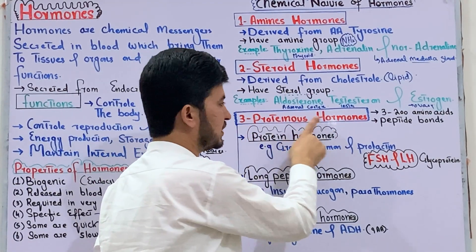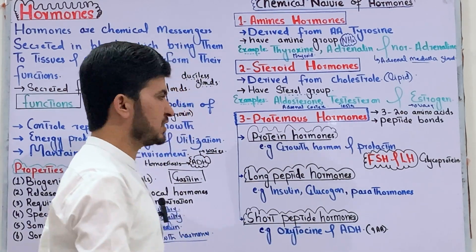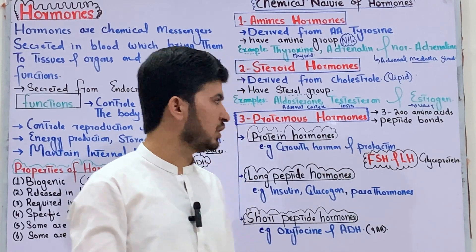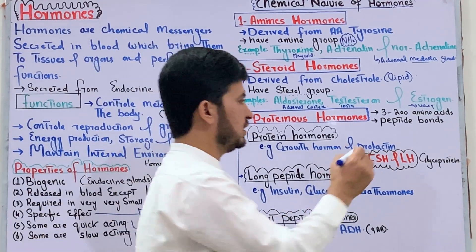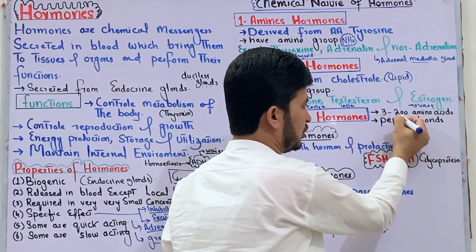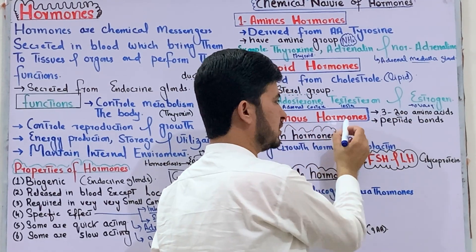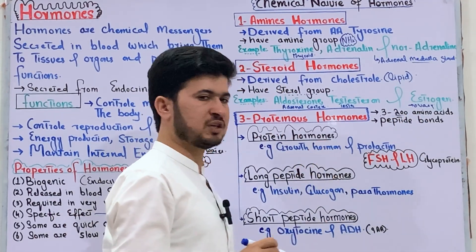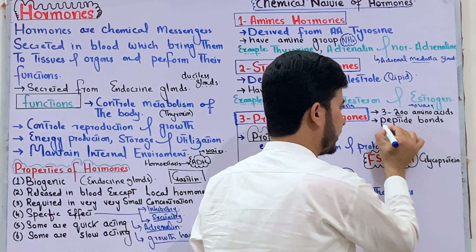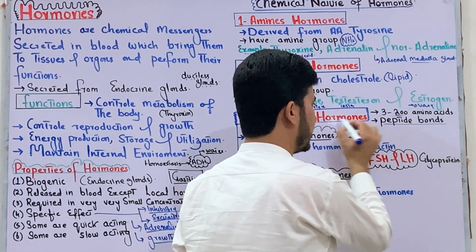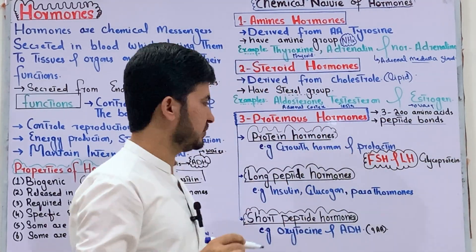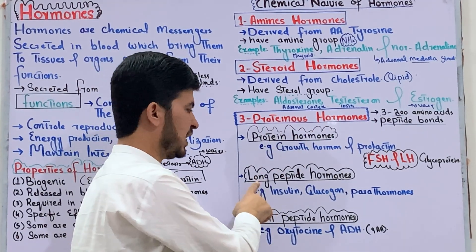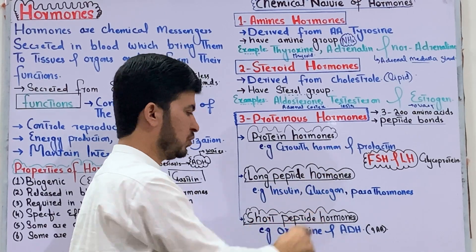The third type is proteinous hormones. Proteinous hormones are made of protein, consisting of a large number of amino acids. Proteinous hormones are further divided into three sub-groups. The first sub-group is glycoprotein hormones — these are protein hormones that also have a carbohydrate part attached, making them glycoproteins.